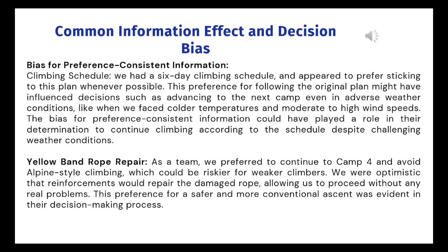Regarding bias for preference as consistent information: we had a six-day climbing schedule, and there was a strong preference to stick to this plan whenever possible. This influenced decisions to advance to the next camp despite challenging weather conditions such as colder temperatures and moderate to high wind speeds. During the yellow band rope repair, we preferred to continue to Camp 4 and avoid riskier alpine-style climbing. We were optimistic about repairing the damaged rope, which supported a safer and more conventional ascent.